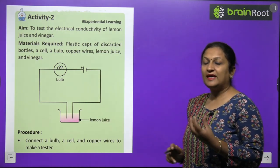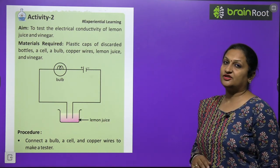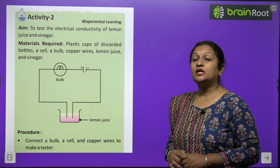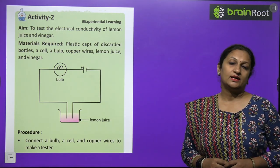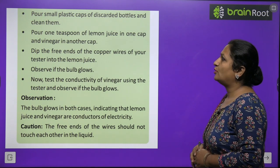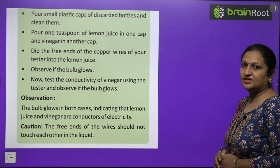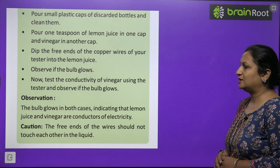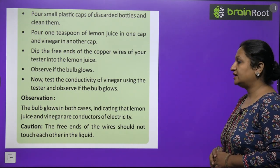Now the tester is ready. The bulb will start to glow, but very faintly, because lemon juice and vinegar are not strong electrolytes. Pour lemon juice in one cap and vinegar in another. Dip the free ends of the copper wire into the lemon juice and observe if the bulb glows. Then test vinegar similarly. In both cases, the bulb will glow, indicating that lemon juice and vinegar are conductors of electricity.